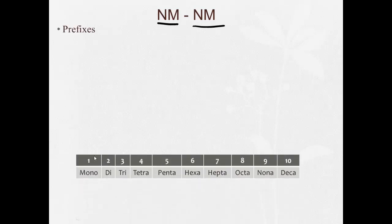Finally, when we have nonmetals combined with other nonmetals, we use what's called prefixes. And the prefixes are going to tell us how many of each are in the compound. And these we just have to memorize, unfortunately.